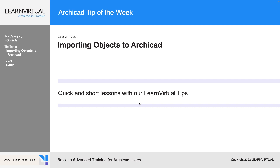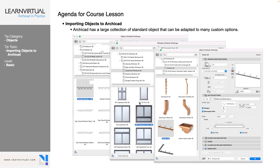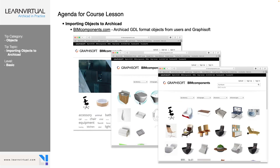Our tip of the week is how to import objects into ARCHICAD. ARCHICAD comes with a very large collection of standard objects. Most of these objects are very parametric and we can adjust them to the needs of our project. But there are times when we are going to want to show something that is very unique and specific to that project, or something that the default libraries don't have for us.